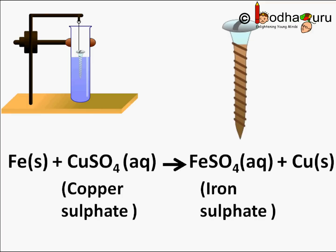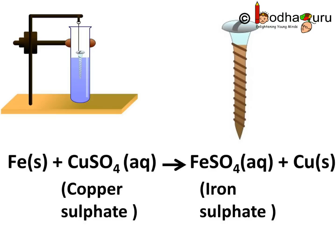For example, if you keep an iron nail in blue color copper sulfate solution, then after some time you will observe that the iron nail will turn brownish. And also the copper sulfate solution will fade. Why?